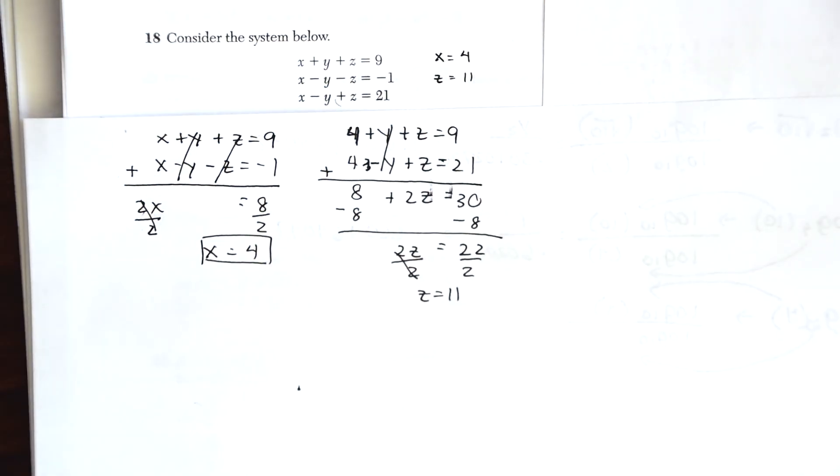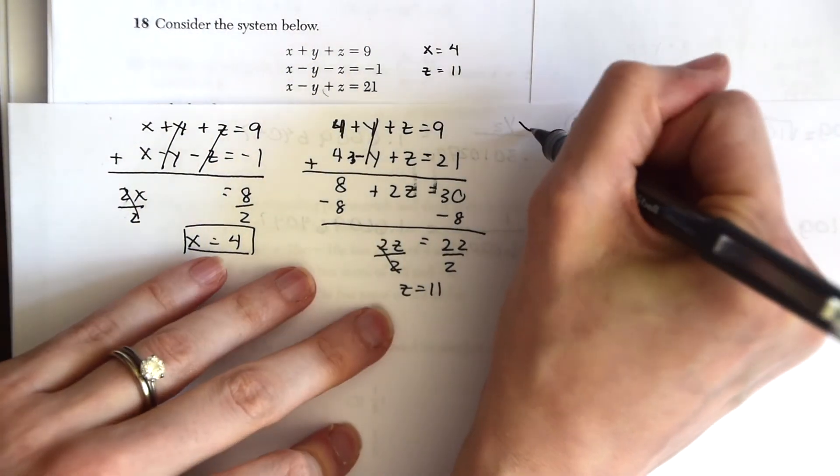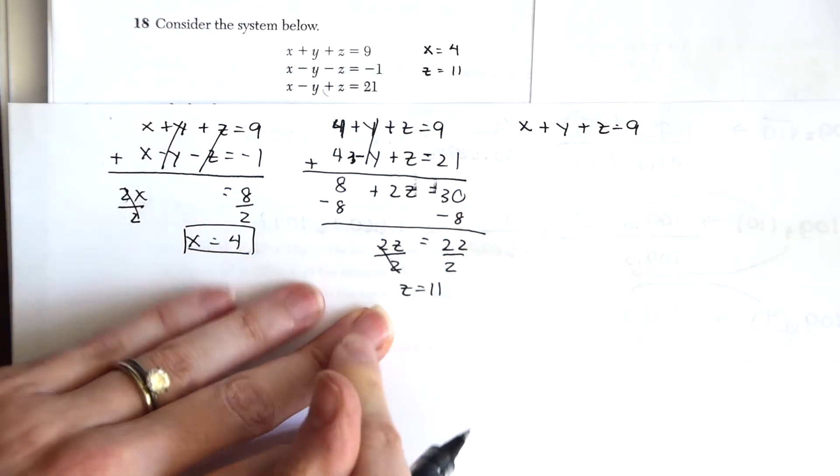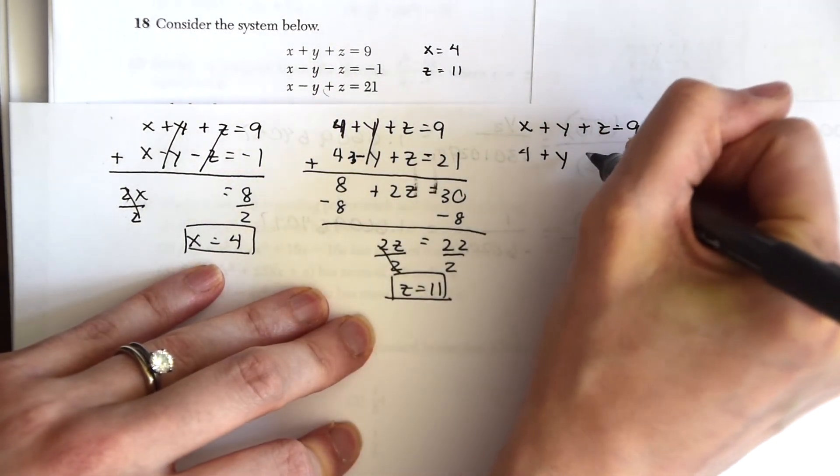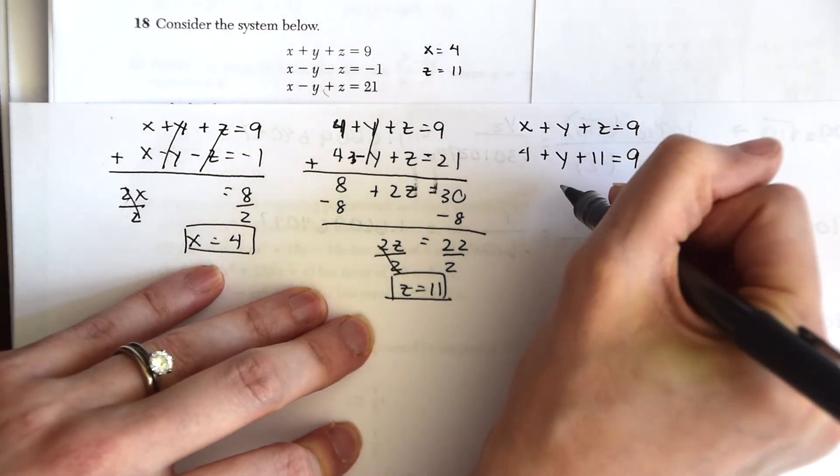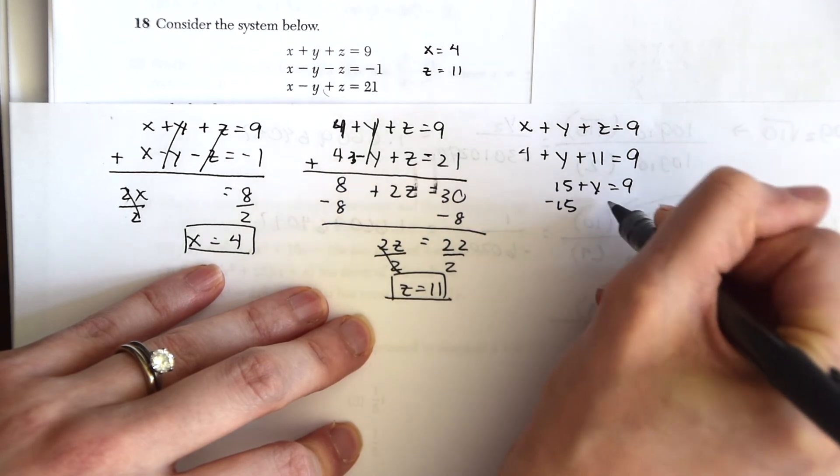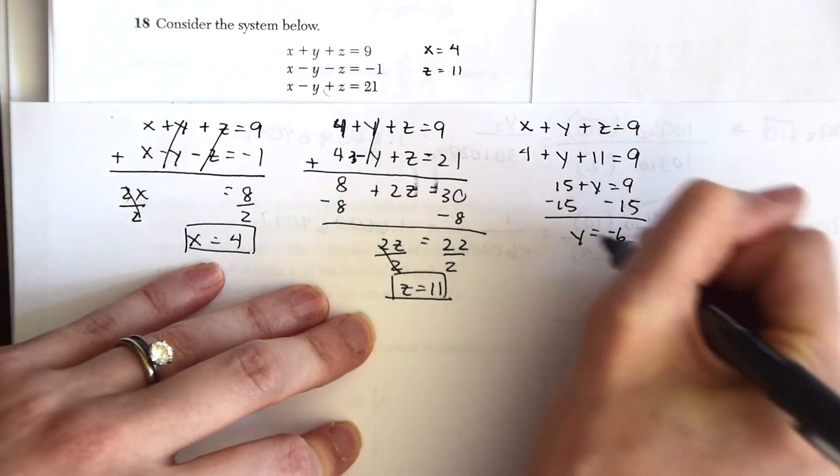So now that we have almost every variable, we can find the last one. We could find the value of y. So let's just take one of our equations. We have x + y + z = 9, and now we're going to plug in everything we have so far. So we have x = 4. We don't know y yet, and then we have 11 for z. So this will give us 15 + y = 9. So subtract 15 from both sides, and we end up with y = -6.